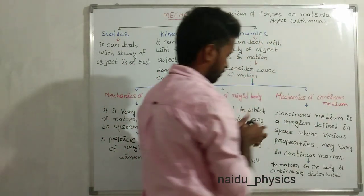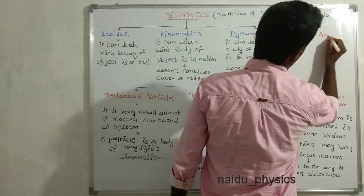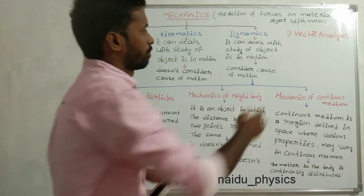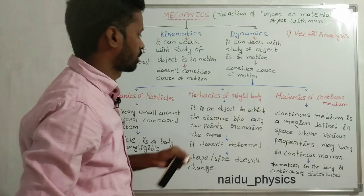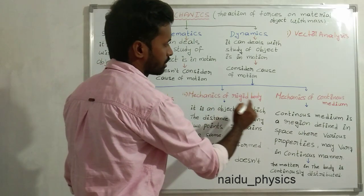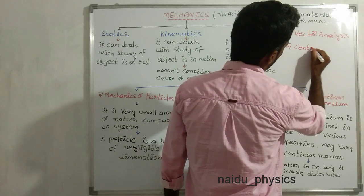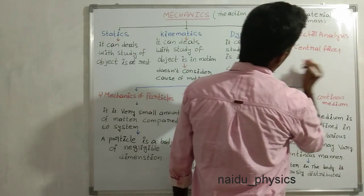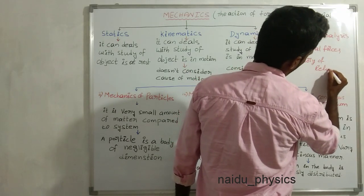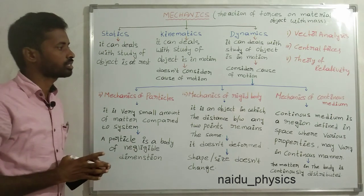Before entering these three topics, we have to learn vector analysis. The first unit is vector analysis, the second unit is Mechanics of Particles, the third unit is Mechanics of Rigid Body and Continuous Media, the fourth unit is Central Forces, and the fifth unit is Theory of Relativity. These are the topics we have to learn in first B.Sc., first semester.